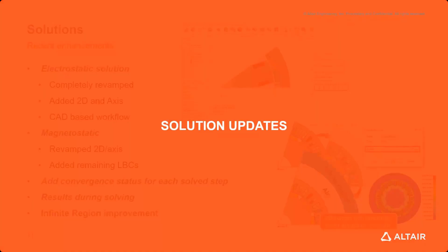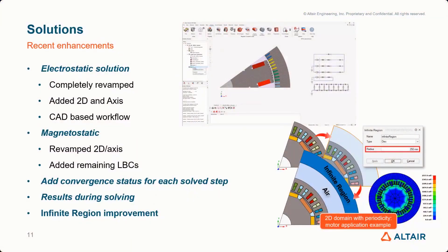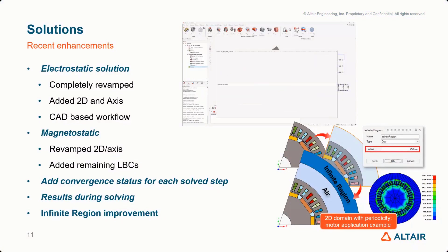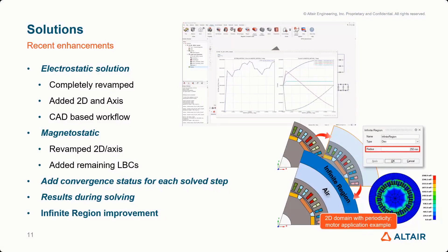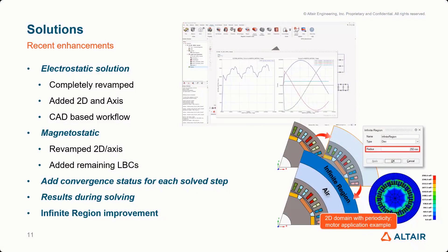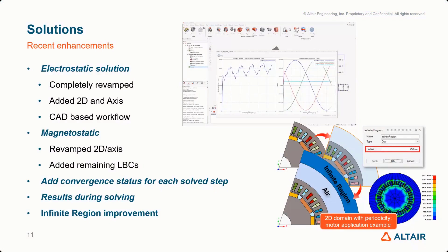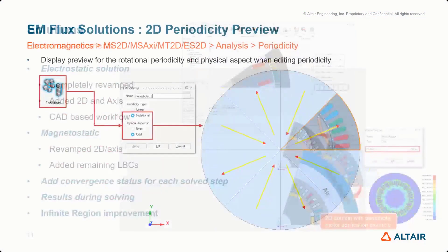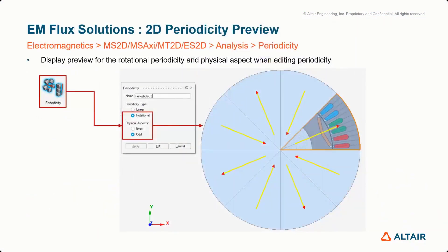These functionalities have been extended to all available HiCHelm solutions, and the possibility of viewing results during the solving phase was also implemented. Infinite regions will be created in SimLab 2025 — both CAD bodies and meshes — and can be used in further post-processing after solving. We also added the convergence status for each solved step, and we can now display the preview of rotational periodicity and physical aspects when editing the periodicity, making it more clear for the user.